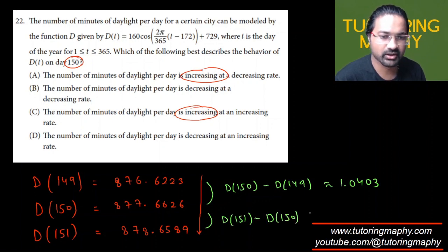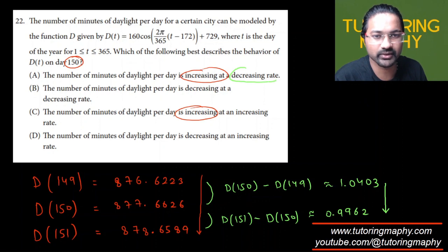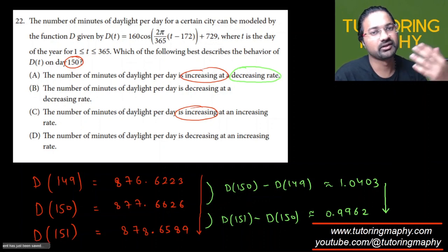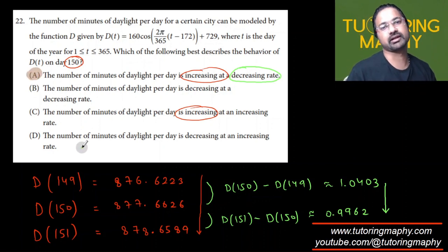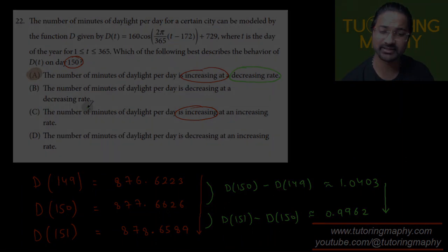So obviously this difference is decreasing, and if this difference is decreasing, it means that the rate is also decreasing. The consecutive difference gives us the rate at which it is happening. So since the difference is decreasing, the function is increasing because the y values are increasing, but at a decreasing rate. So it should be option A. That's the final answer. Hope that makes sense.